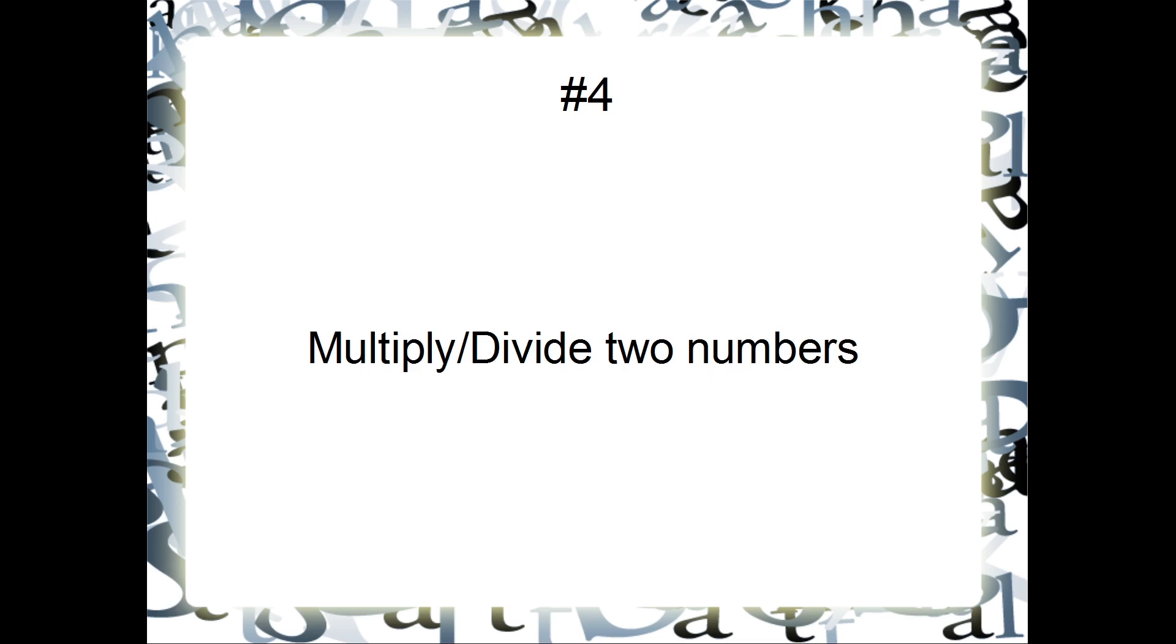For divide, numerator is stored in accumulator and denominator will be stored in some other register. And from numerator, you have to keep on subtracting the divisor till the numerator value becomes smaller than the denominator.